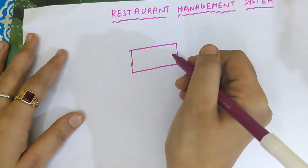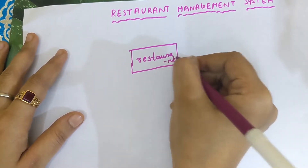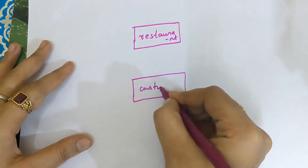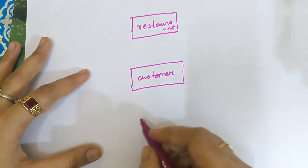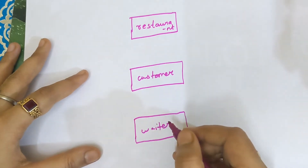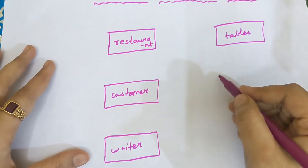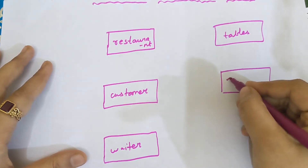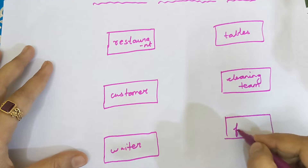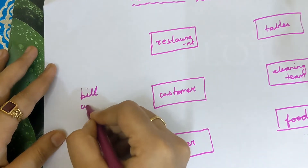I am drawing a rectangular box and writing the entity name 'restaurant' inside it. Next I am drawing another rectangular box and writing 'customer' inside it. Next I am drawing another rectangular box and writing 'waiter' inside it. Next I am drawing a rectangular box and writing 'tables' inside it. Next I am drawing another rectangular box and writing 'food' inside it. Next I am drawing another rectangular box and writing 'bill counter' inside it.